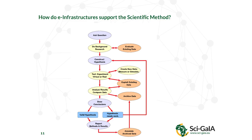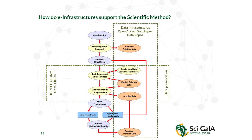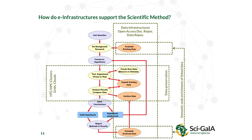E-infrastructures are also key to support the scientific method — that looping procedure. High-performance computing clusters, grids, and clouds are very important to analyze data, exploit existing data, and archive data. For archiving, data preservation and data infrastructures are also important — in the general meaning of open access document repositories and open data repositories — to share research data together with publications and let people annotate and produce new papers. Semantic web technologies are also important to connect different topics and link data, documents, and different elements of scientific results.